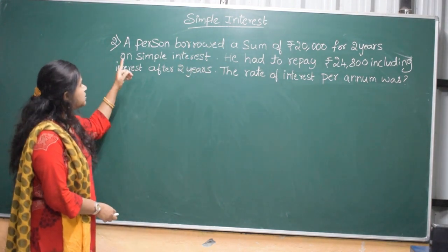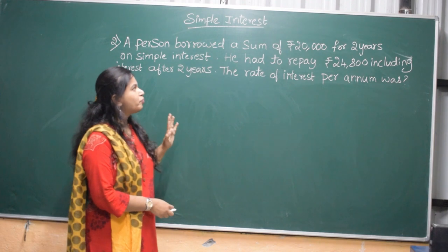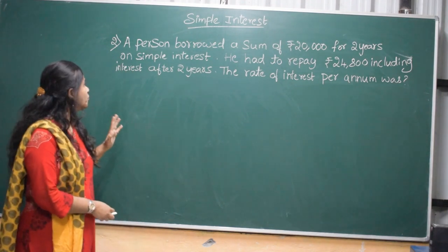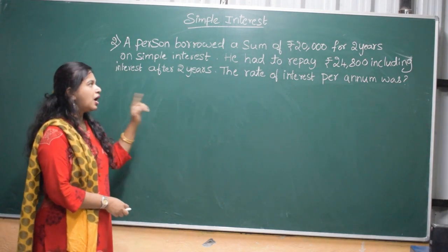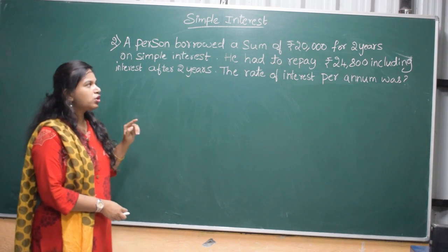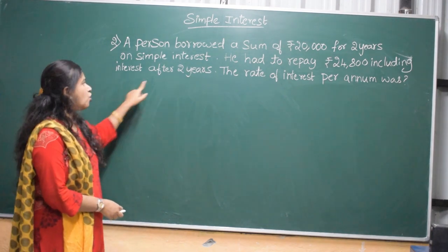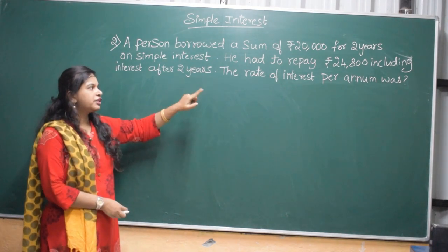Problem is, a person borrowed a sum of Rs. 20,000 for 2 years on simple interest. He had to repay Rs. 24,800 including interest after 2 years. The rate of interest per annum was.